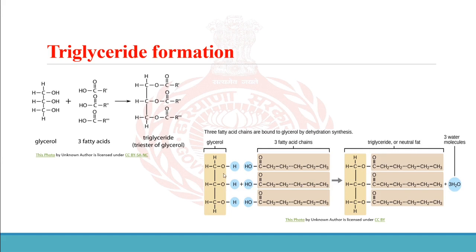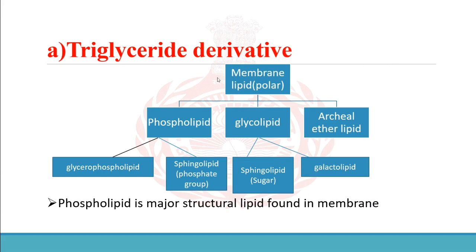Triglycerides are formed by glycerol and fatty acid combination, and they are also called neutral fat. Triglycerides are neutral, but triglyceride derivative membrane lipids are polar. There are three types of membrane lipids derived from triglycerides: phospholipid, glycolipid, and archaeal ether lipid. Archaeal ether lipid is found in bacteria.